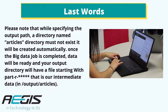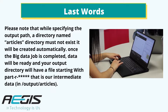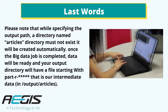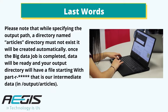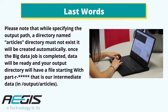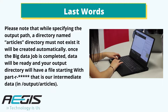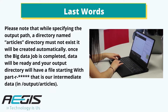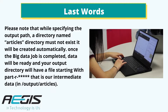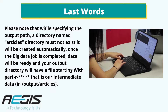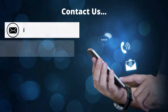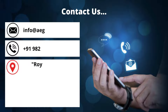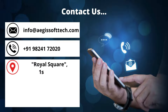Once the Big Data job is completed, data will be ready and your output directory will have a file starting with 'part' — that is our intermediate data in output articles. If you have any queries regarding this implementation, feel free to contact us.